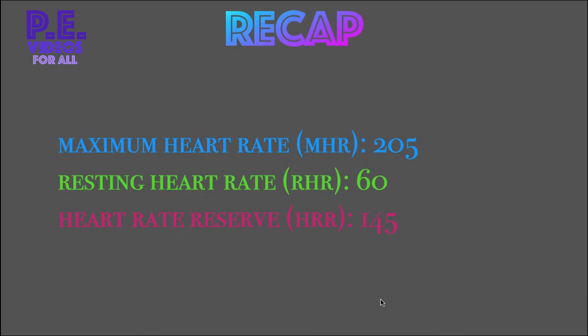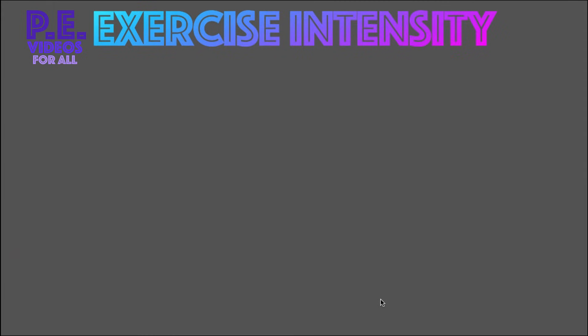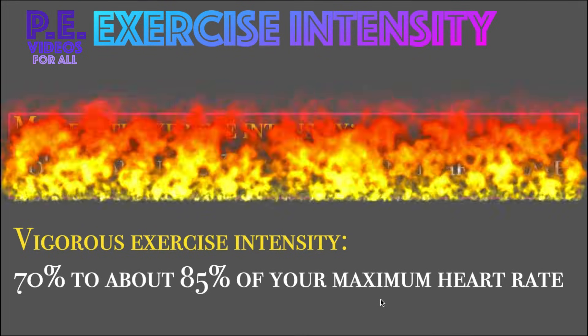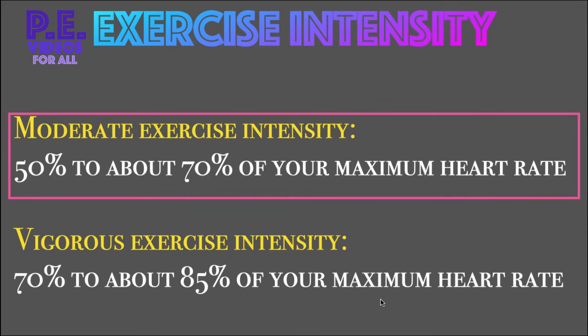Recap: your maximum heart rate is 205, resting heart rate is 60, and heart rate reserve is 145. We need this data later in computing your target heart rate. There are different intensity levels in exercise. We have moderate exercise, that is 50% to about 70% of your maximum heart rate, and we have vigorous exercise, that is 70% to about 85% of your maximum heart rate. We are going to use moderate exercise to compute our target heart rate.